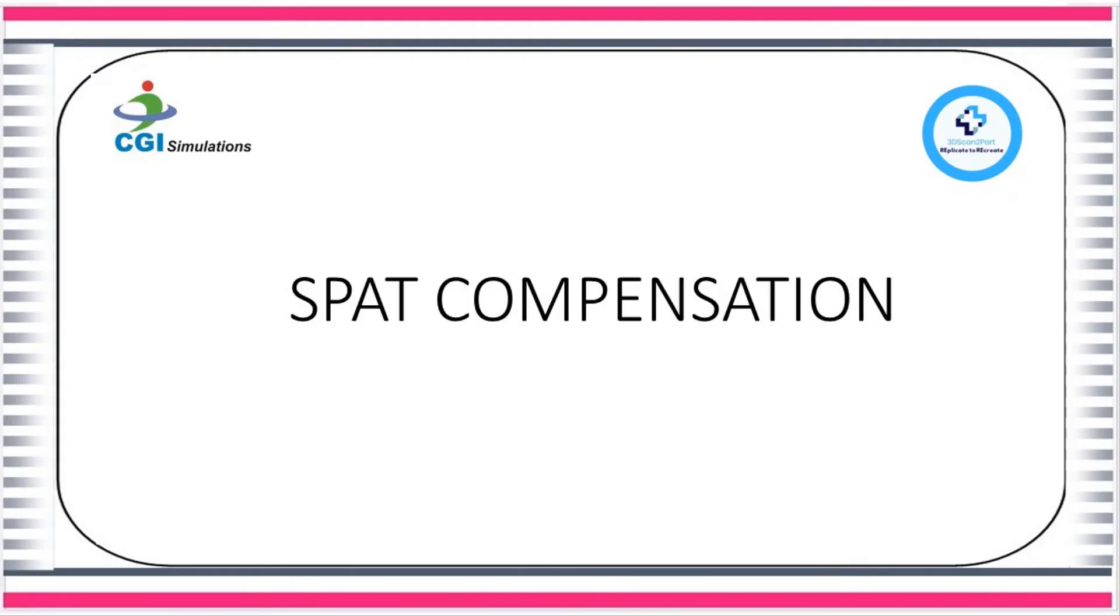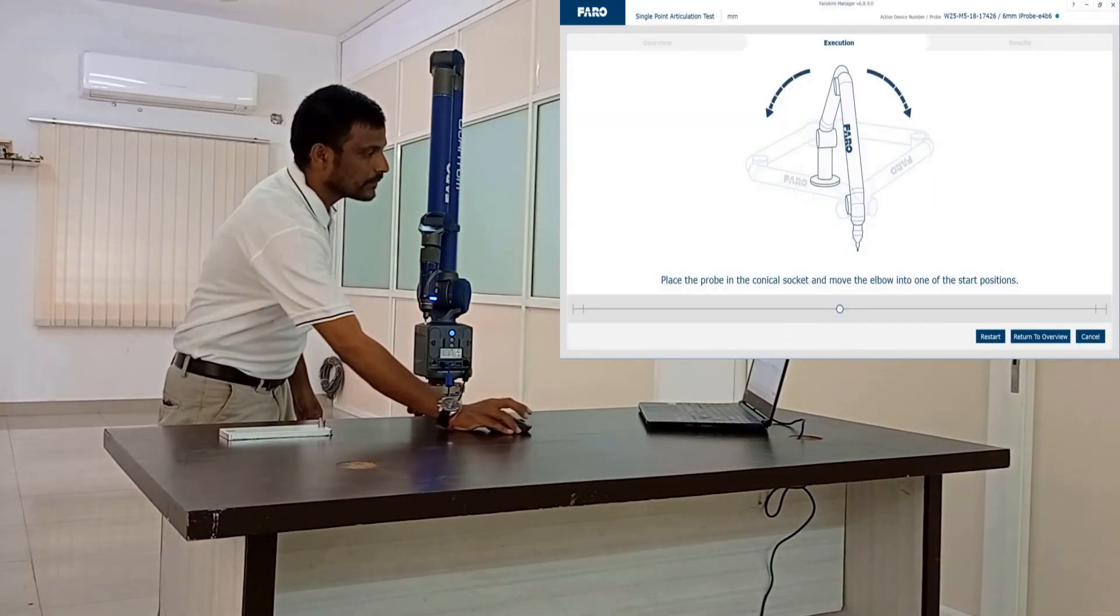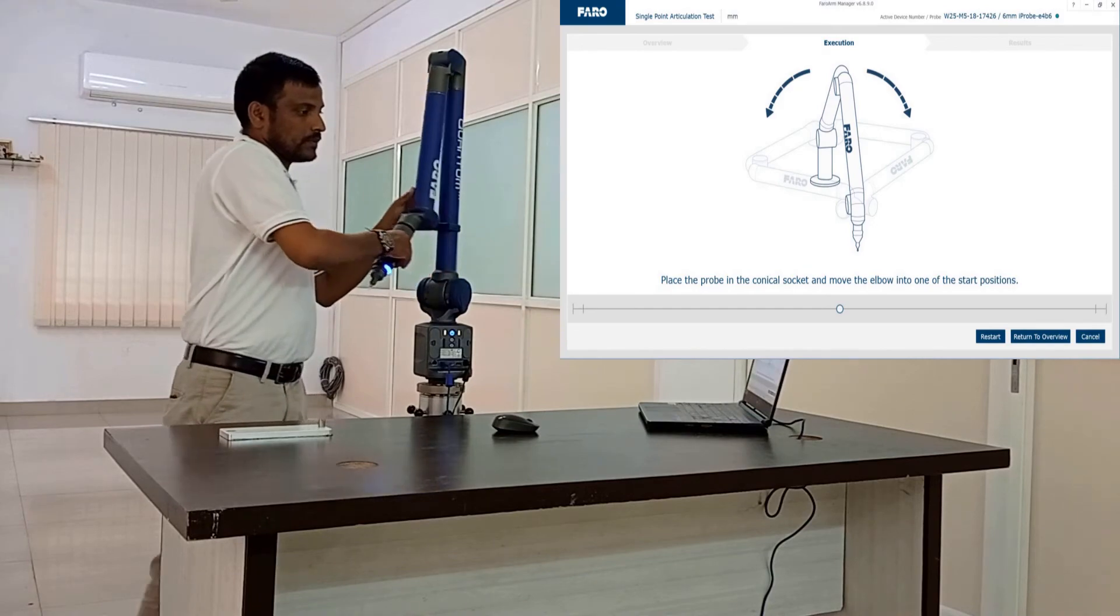Let us do SPAT compensation. SPAT stands for single point articulation test. In the Faro arm manager click on SPAT compensation. Place the probe in the conical socket.